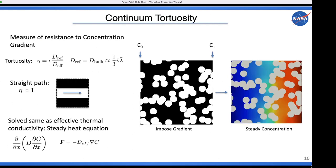Tortuosity is a material's resistance to diffusion. The diffusion equation is mathematically the same as the heat equation, so in the continuum regime you impose a concentration gradient, drive it to steady state, measure the steady-state mass flux, and back out the tortuosity value. A tortuosity of 1 means no resistance (straight path), and anything higher indicates impedance — it's essentially a multiplicative impedance factor on your diffusion coefficient.